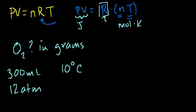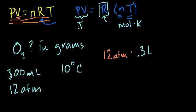Let's break out our ideal gas equation. Pressure is 12 atmospheres, so 12 atmospheres times the volume. The volume should be in liters. This is 300 milliliters, or 0.3 liters, right? And that is equal to the number of moles we have. That's what we need to figure out. If we know the number of moles, we know the number of grams.